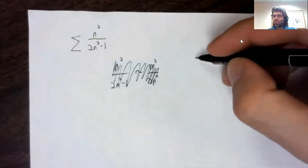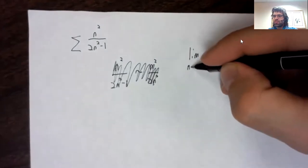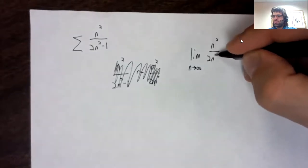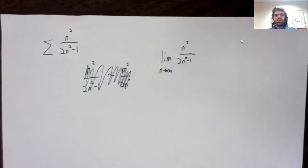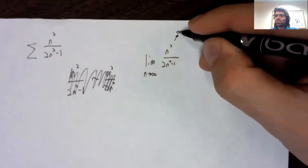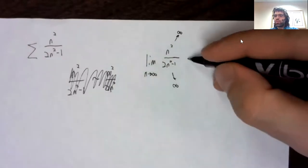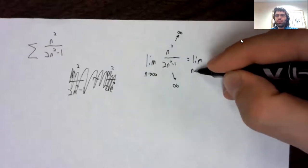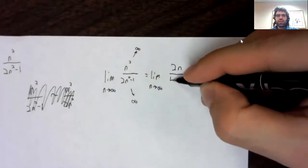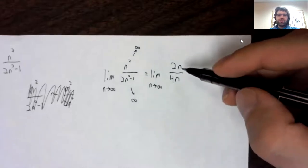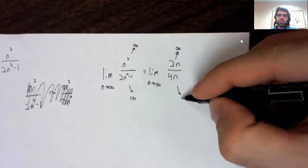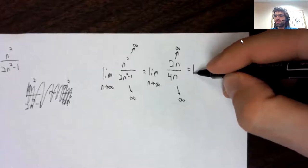But the limit as n goes to infinity of this fraction. This is indeterminate. The numerator and the denominator are both going to zero. So we take the derivative. And this is still zero. Indeterminate, numerator and denominator are still going to zero.